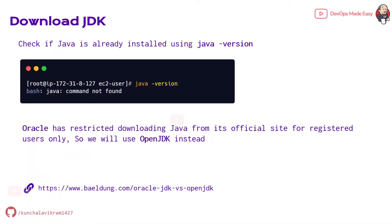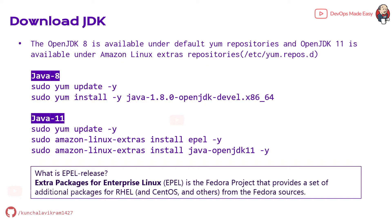We'll start by checking whether Java is already installed in AWS EC2 by running 'java -version'. If the output gives you the Java version, Java is already installed. If it says 'Java command not found', we have to install Java. Since Oracle has restricted downloading Java from its official website to registered users only, we'll be using OpenJDK instead. Depending on the version of Jenkins you are running, you should install Java 8 or 11. Since we'll be installing the latest version of Jenkins, we'll be going for OpenJDK 11.